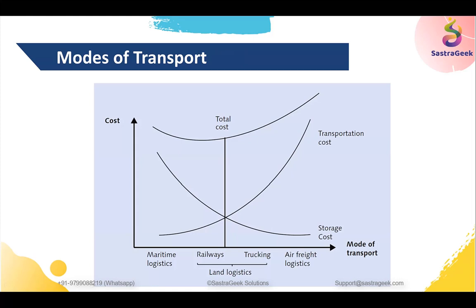Modes of transport — there are four modes: maritime, which is sea or ship; rail; trucking; and air. Rail and trucking form land logistics, while maritime and air freight are different altogether. Looking at storage cost versus transportation cost — trucking is cost-effective but has lower storage capacity. Air has very low storage capacity but the highest cost. Rail is cheaper with higher storage capacity. Ship is the cheapest way from a cost perspective and has the highest storage volume.